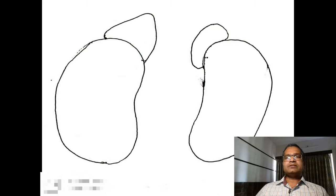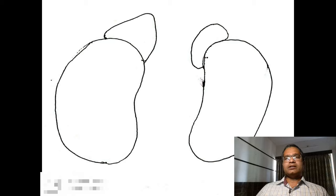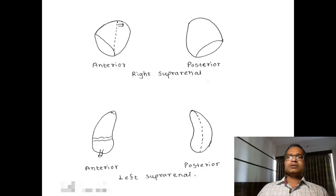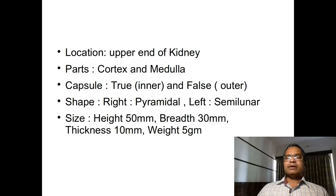Today we will start with the suprarenal gland. These are two small glands in relation with the upper aspect of both the right and left kidney. These glands show distinct parts: an outer cortex and an inner medulla. Both glands are covered by capsules.